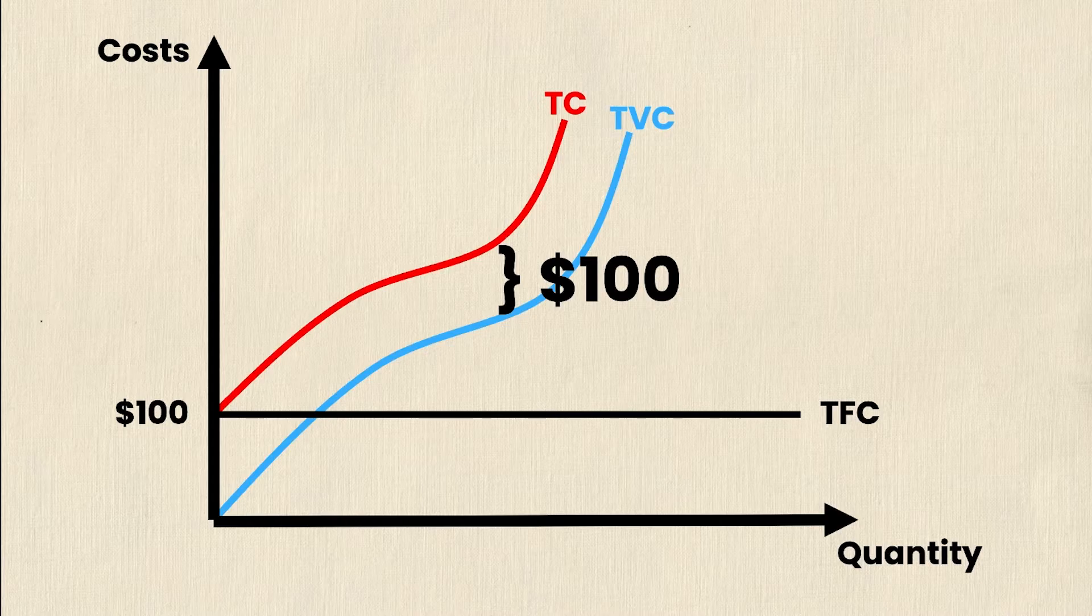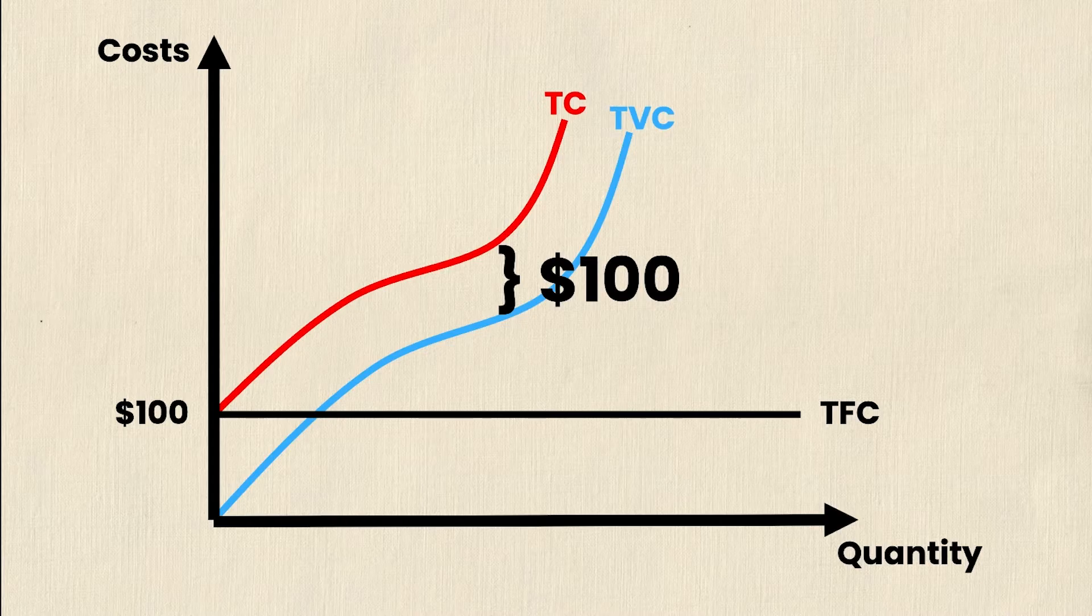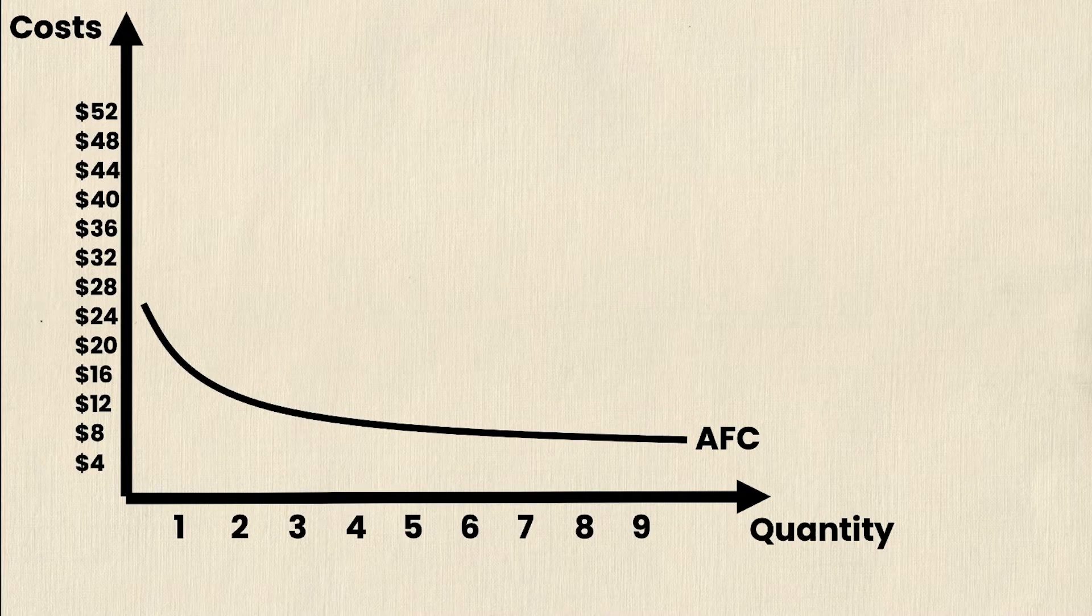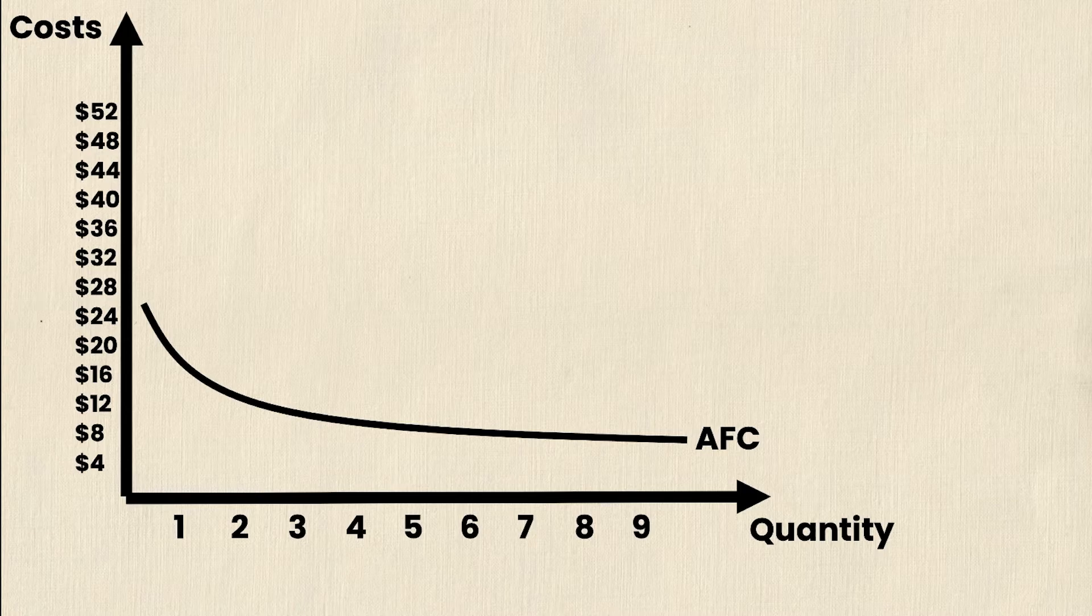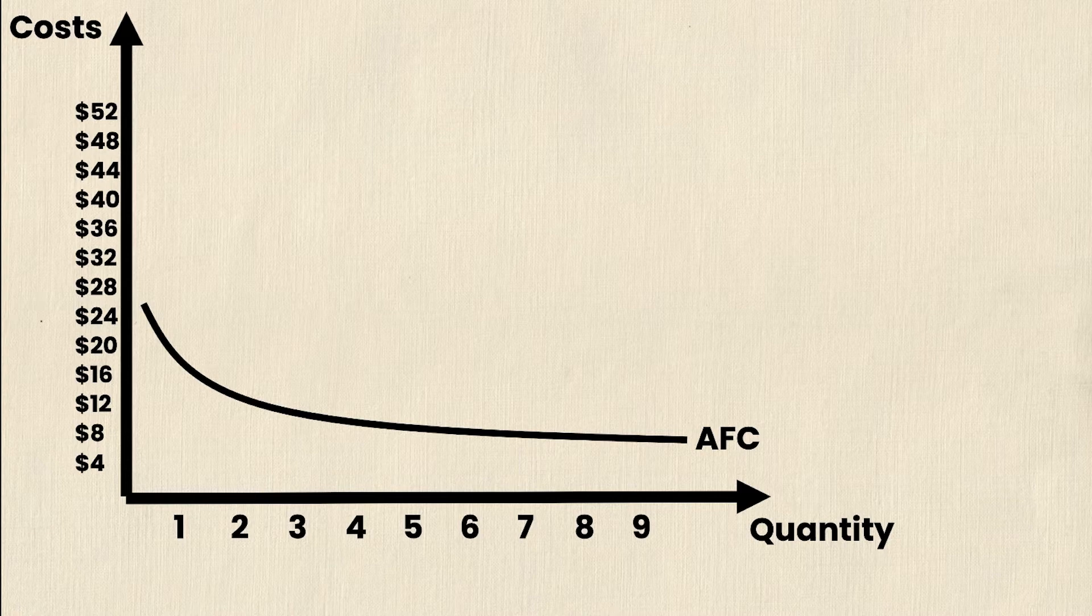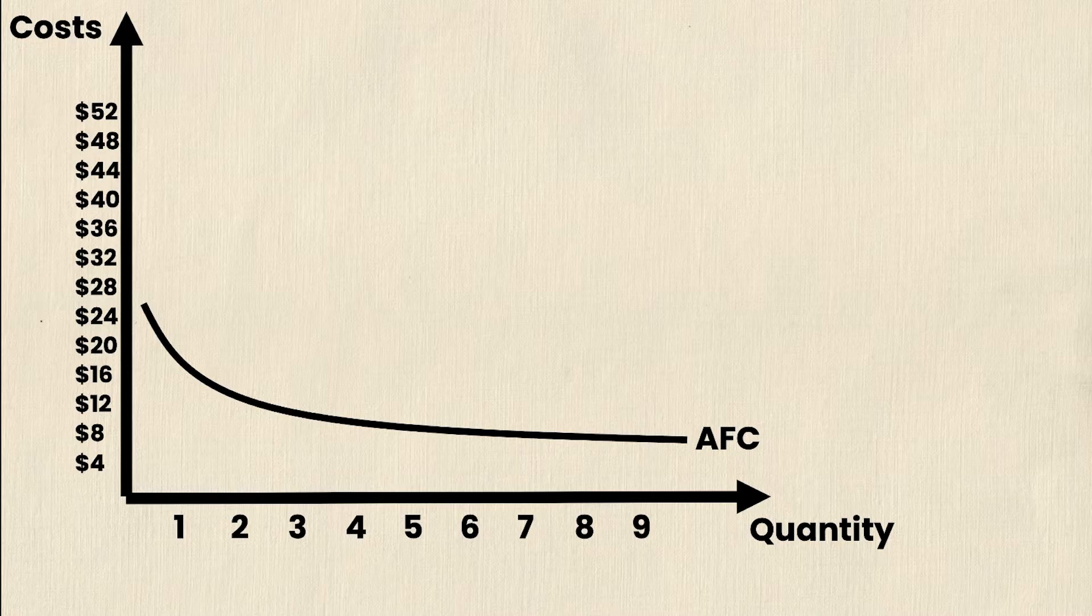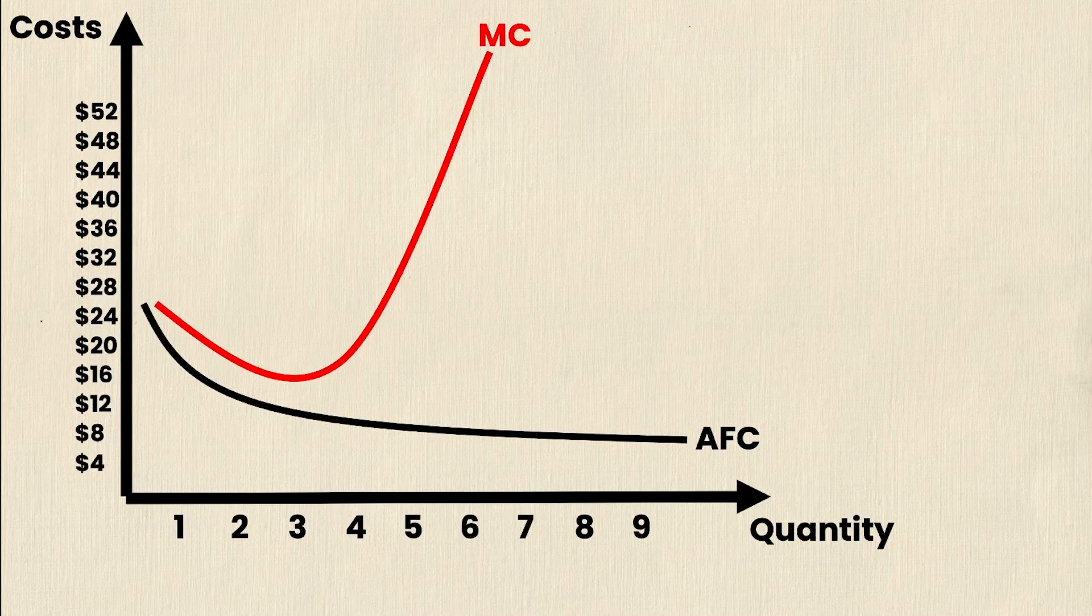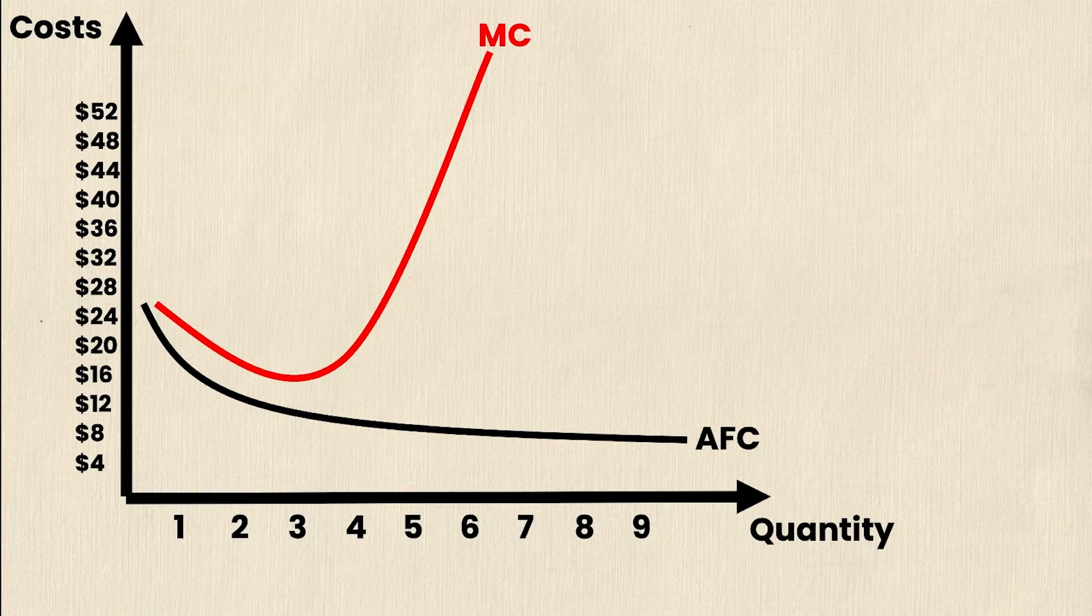But what's much more useful and something that you'll spend a lot more time on when studying cost curves are the per unit costs. You'll start by looking at something called the average fixed cost, which starts off higher and then decreases as quantity increases. This makes sense because the total fixed cost is a fixed number, but the average fixed cost is that total fixed cost divided by quantity. So the more quantity you produce, the smaller the average fixed cost will become, because you're taking a fixed cost and dividing it by more and more units. Then we have the marginal cost, which we know from a previous video is the cost of creating one additional unit. This curve begins going down and then turns and steeply increases due to diminishing returns.